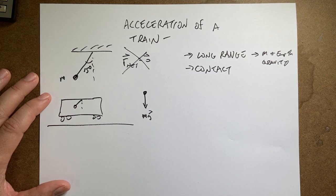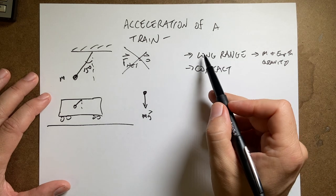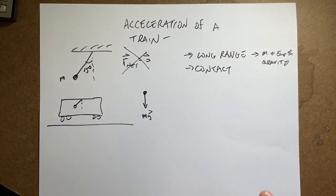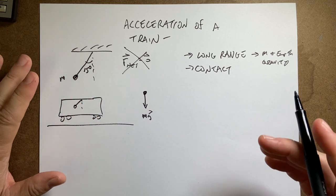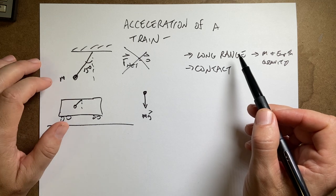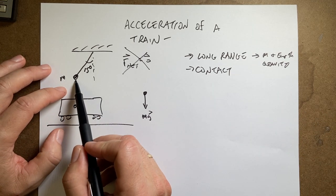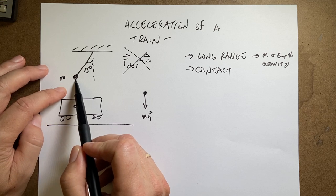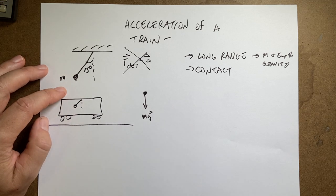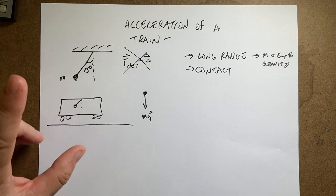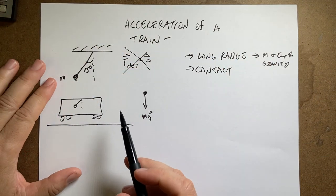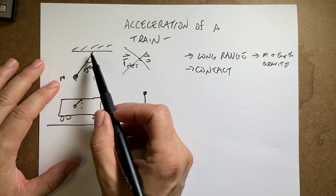So what forces are acting on the mass? Well we can break these into two types. We have long range forces and contact forces. And this is just an artificial break up because everything is essentially long range. But the long range forces are things that interact and don't touch. So the interaction between the mass and the earth, the gravitational interaction is a great example of that. Everything else would have to be touching.